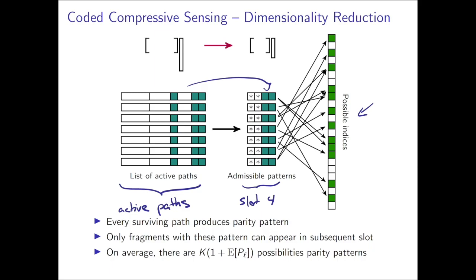Anything that did not get reached from the list of active paths can therefore be discarded preemptively before we run the compressed sensing process for slot four. And this is really the algorithmic opportunity that we seek to take advantage of.